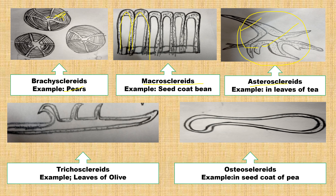Macrosclerids are elongated and mostly cylindrical, found in the seed coat of beans in the epidermal layer of leguminous seeds. Astrosclerids are star-shaped — found mostly in the leaves of tea. Osteosclerids look like a bone and are found in the seed coat of pea and the hypodermal layer of leguminous seed plants. Trichosclerids are very thin, needle-like structures found in the leaves of olive and the root of Monotropa.